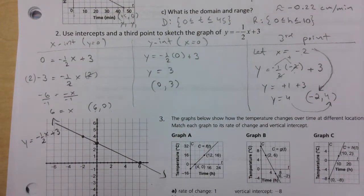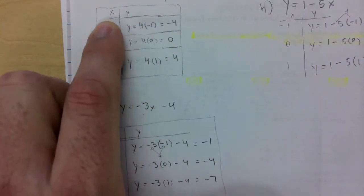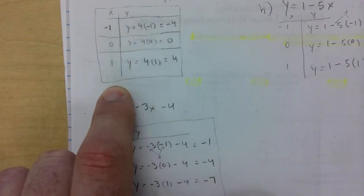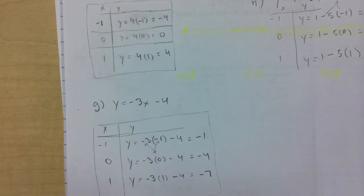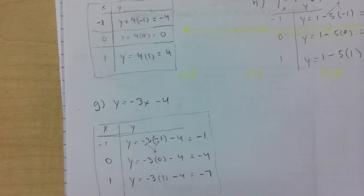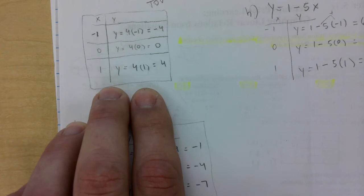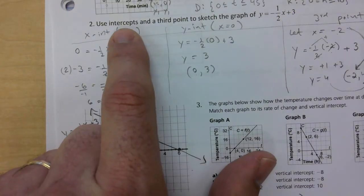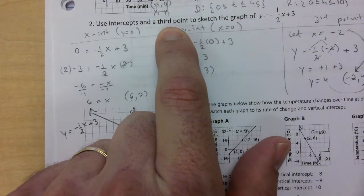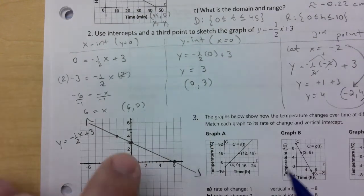We started off by just creating a table of values a couple of lessons back — grab negative one, one, and zero, create our table of values, and graph from there. The truth is you can pick any three values you like: negative two, zero, two — it really doesn't matter. Then yesterday we started talking about using the intercepts and a third point to sketch.